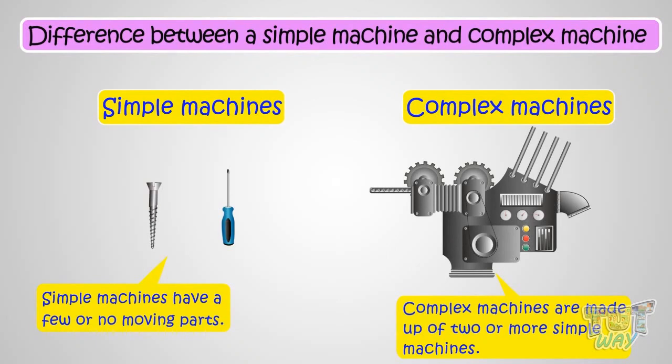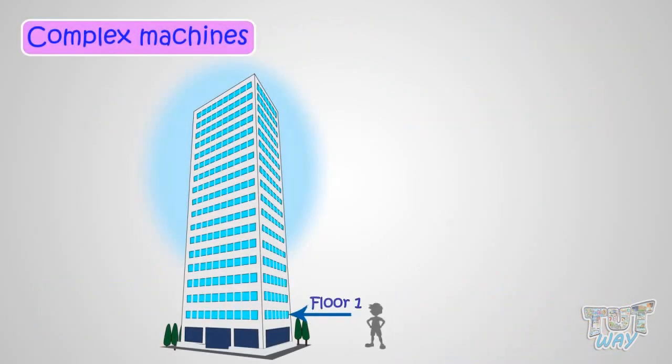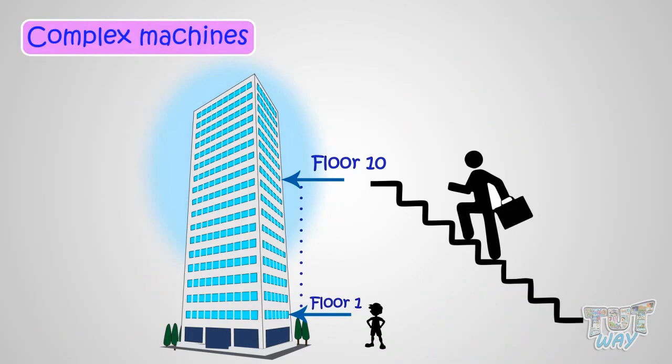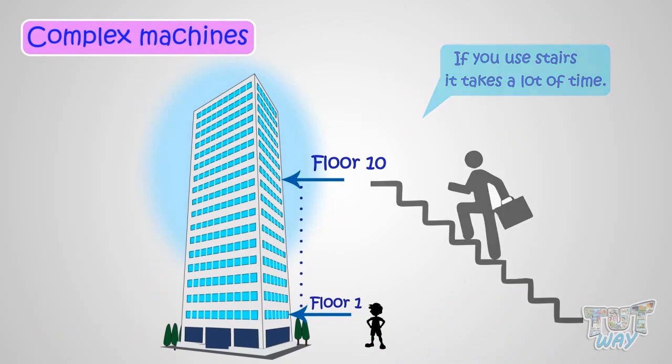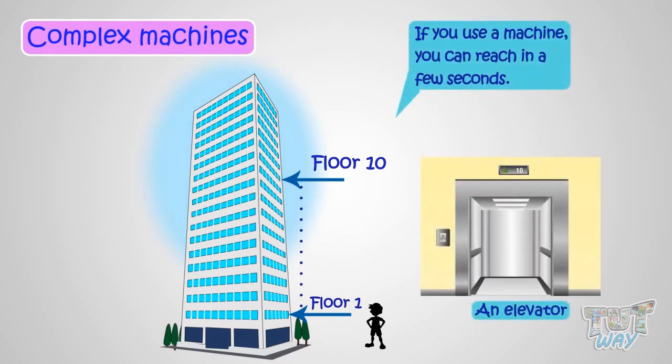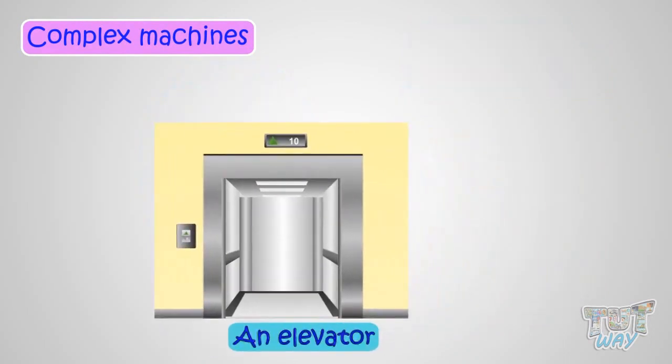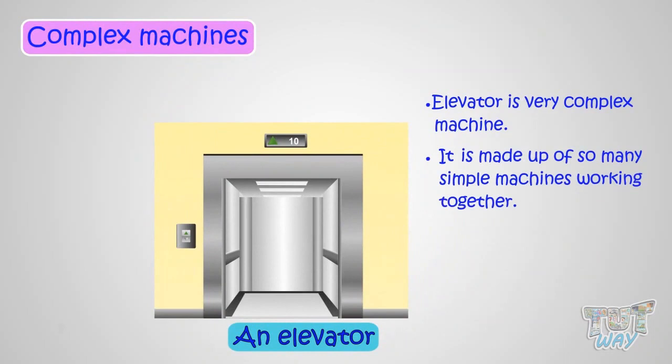Let's have some examples. If you are on floor one and you have to go to floor ten, if you use the stairs, that is, you do not use any machine, it will take a lot of time. On the other hand, if you use a machine, for example an elevator, you can reach in a few seconds. So an elevator is a very complex machine, which is made up of so many simple machines working together.